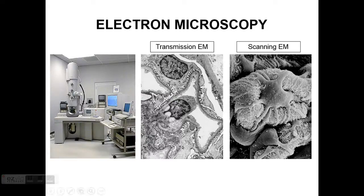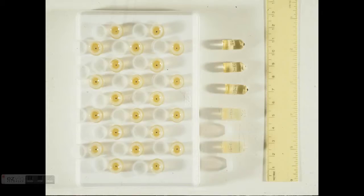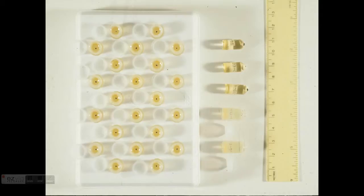Electron microscopy can be transmission or scanning. Transmission electron microscopy is the one we use routinely — you cut a very ultra-thin section and transmit the electron beam through it to view structures. In scanning electron microscopy, you scan the surface and get a more three-dimensional view, as opposed to the two-dimensional view of transmission EM. We don't use scanning electron microscopy routinely. Tissue is processed differently for EM because it must be embedded in a different material that can sustain the electron beam, since paraffin would melt.